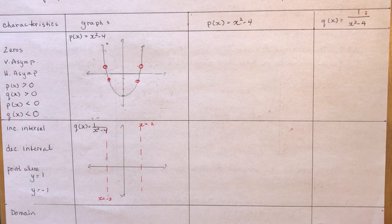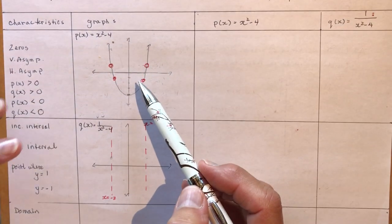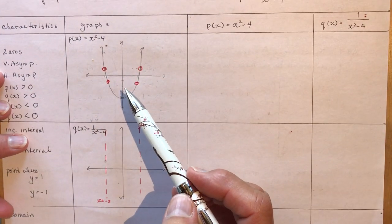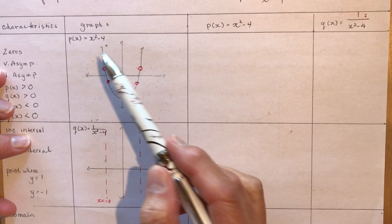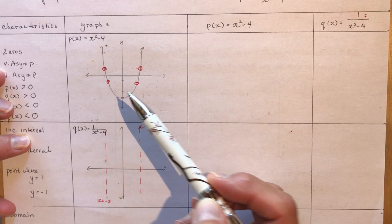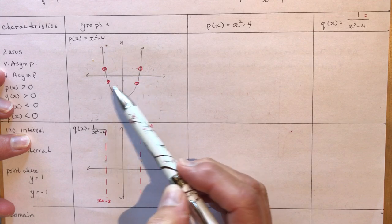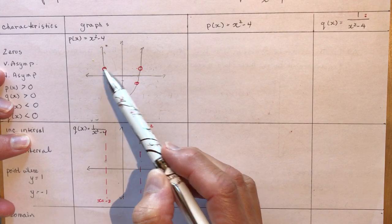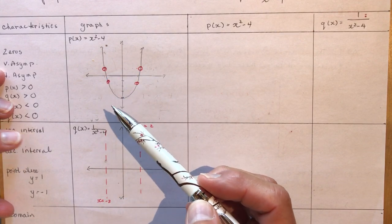The first one we're going to look at is the graph of x squared minus 4. So x squared minus 4 is a parabola shifted down 4 units, and what we need to find are these little circles here, which are the invariant points.